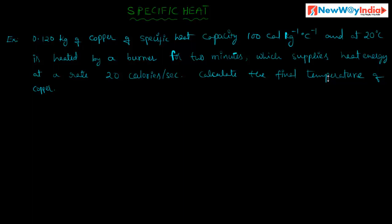In this problem, what are the given components and what do you have to find? You have to find the final temperature of the copper. Mass of the substance is given, specific heat of the substance is given, and the initial temperature is 20 degree centigrade. The applied heat energy is 20 calories per second, so you have to calculate this value for 2 minutes, that means 20 calories per second into 120 seconds.